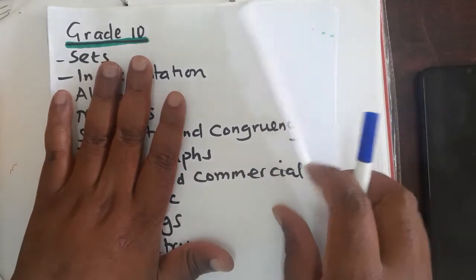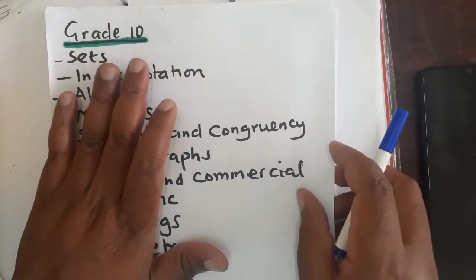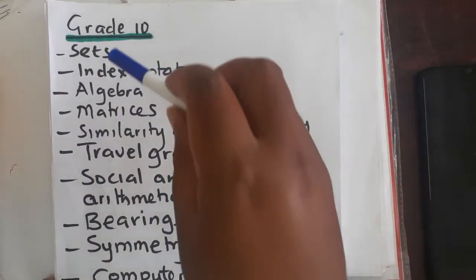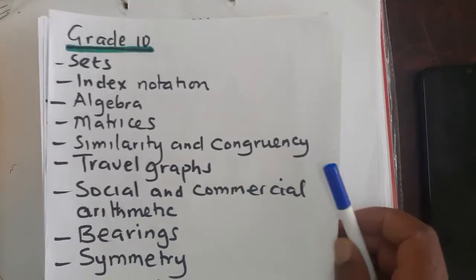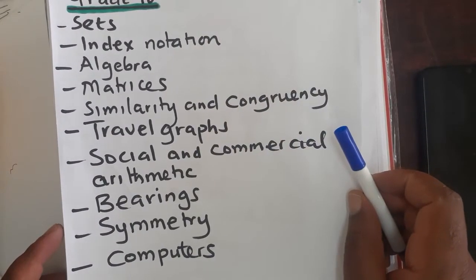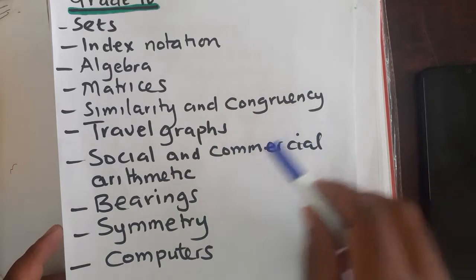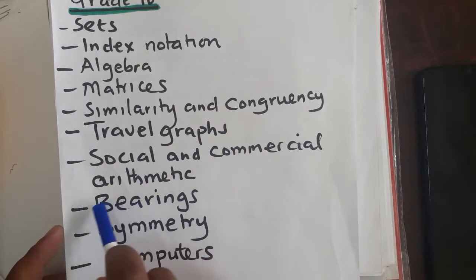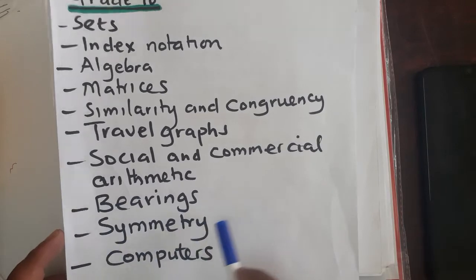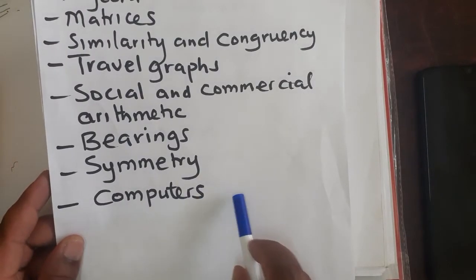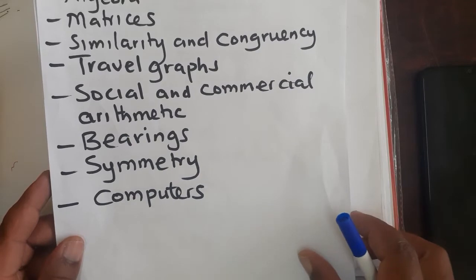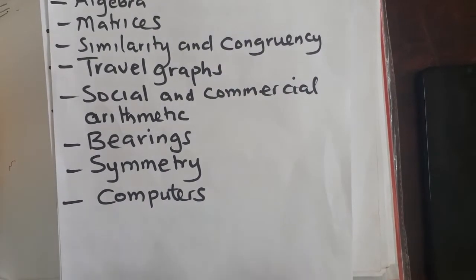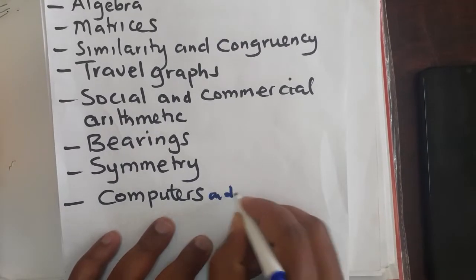We have topics for grade 10, topics for 11 and 12. For grade 10, these are the topics that we have here: Sets, index notation, algebra, matrices, similarity and congruence, you have travel graphs, social and commercial arithmetic, bearings, symmetry, then you have computers and calculators. Take note, this is computers and calculators.